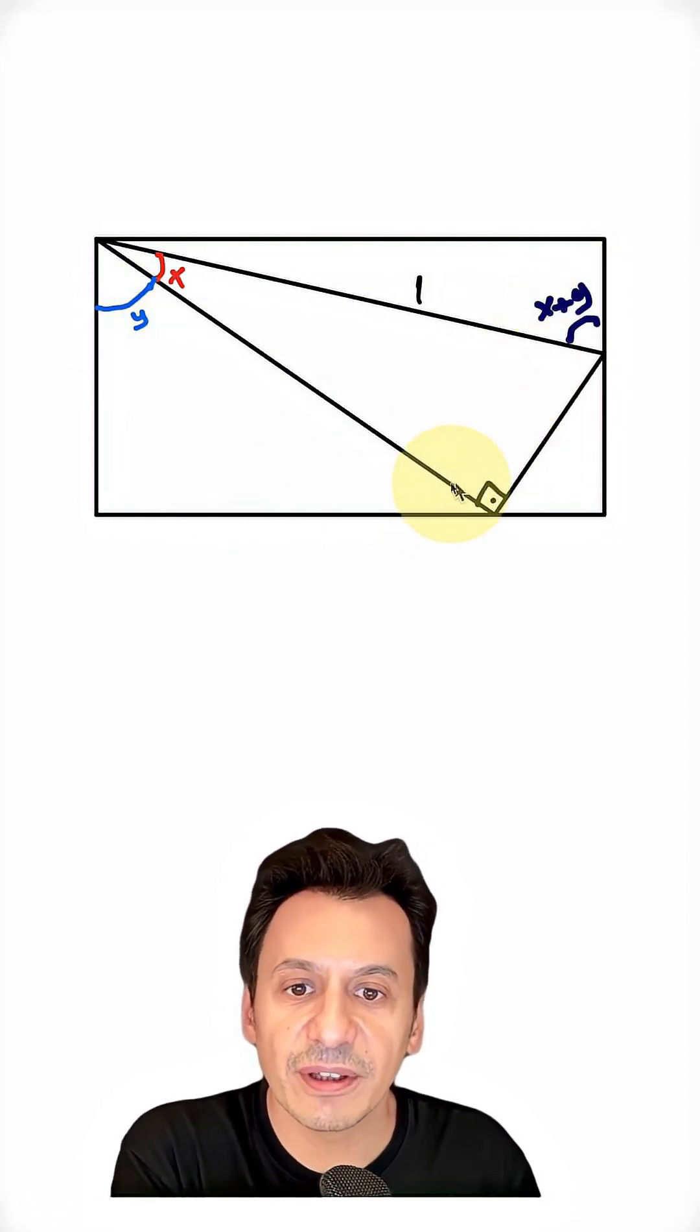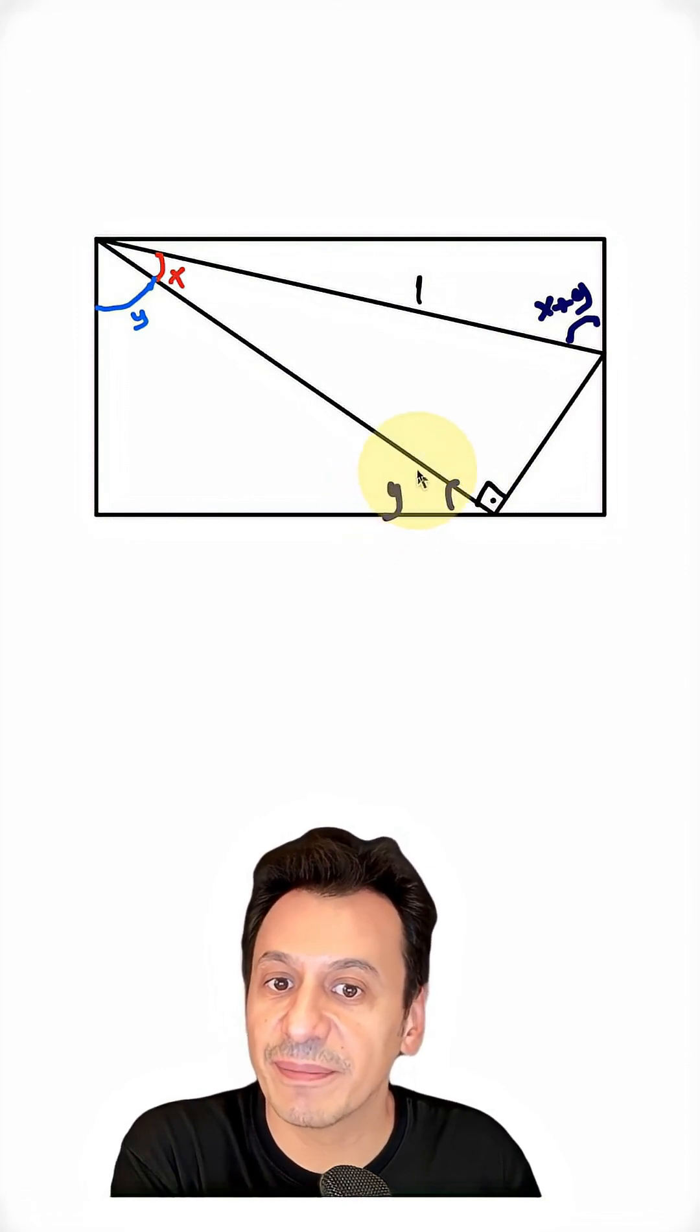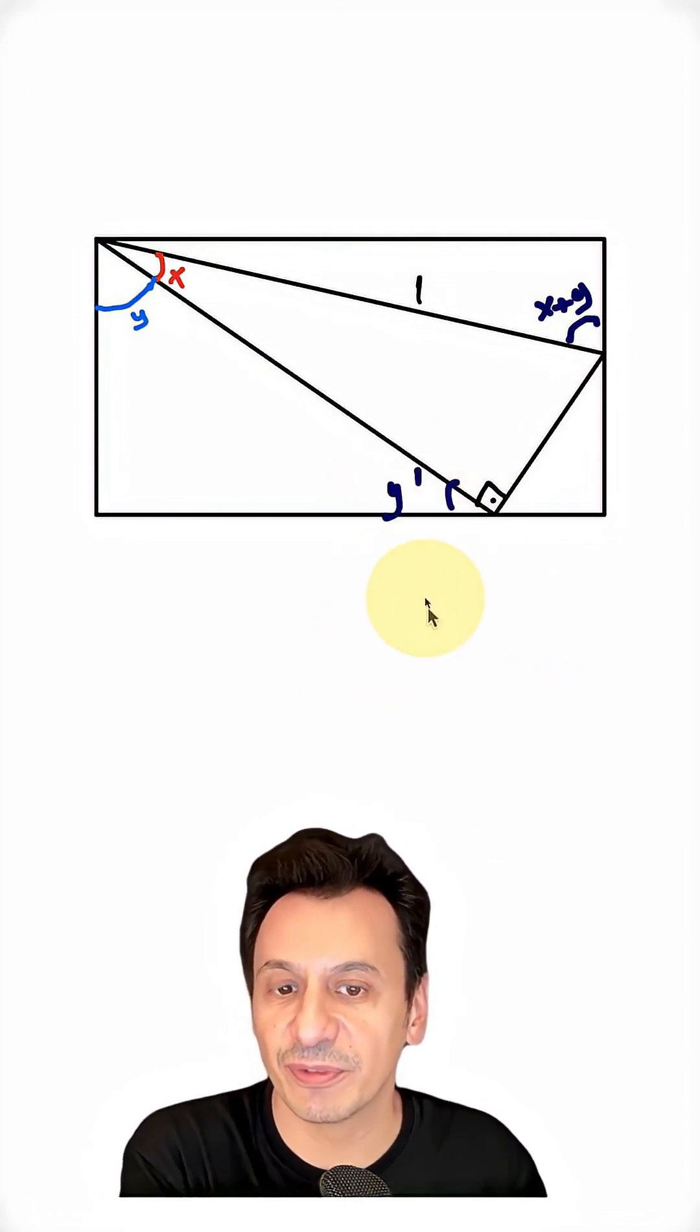If we call this angle y, then we can call this the complement of y. That is, the angle that completes it to 90 degrees.